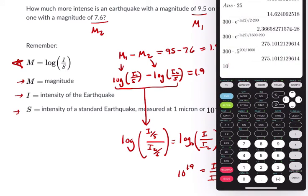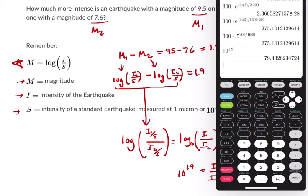So it's going to be 10 to the 1.9, which is 79 times more intense.